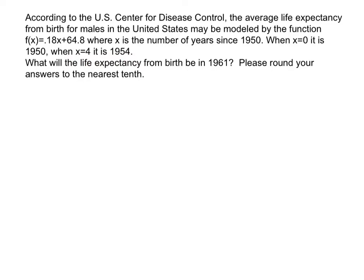Now, on this one we're asked: what would the life expectancy from birth be in 1961? The first thing we've got to determine is how many years since 1950 is 1961. There are 11 years after 1950, so X in this particular scenario would equal 11.